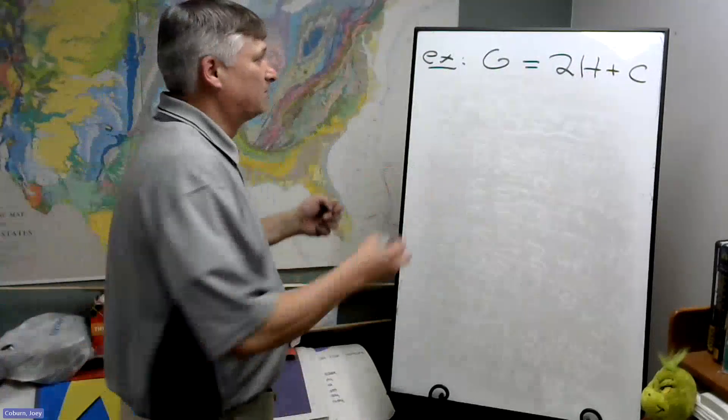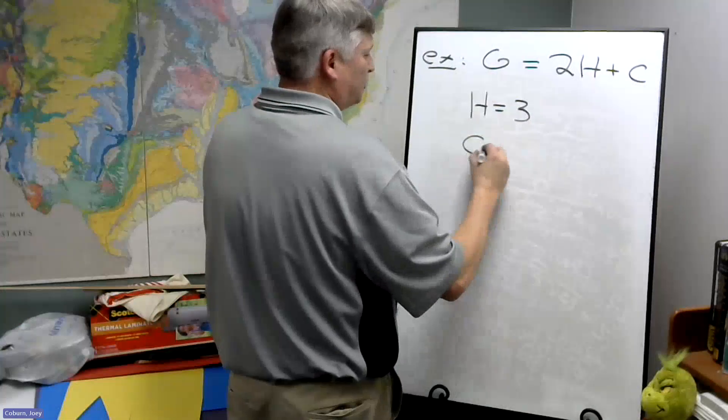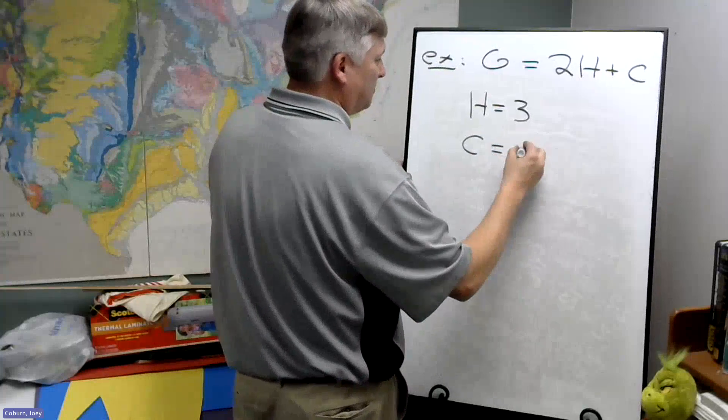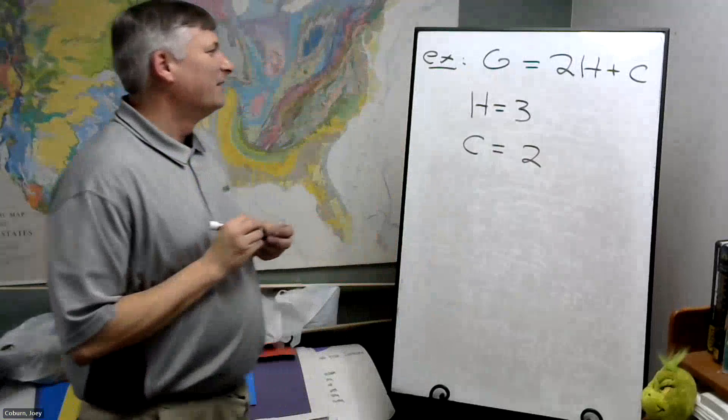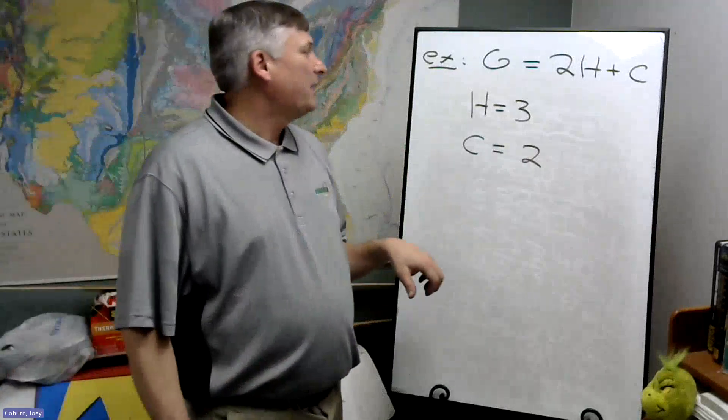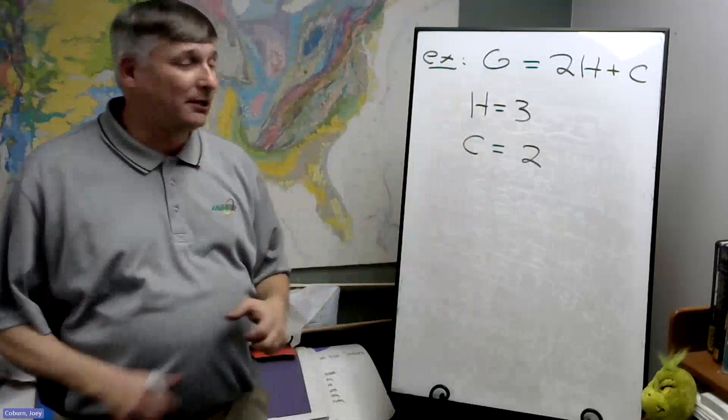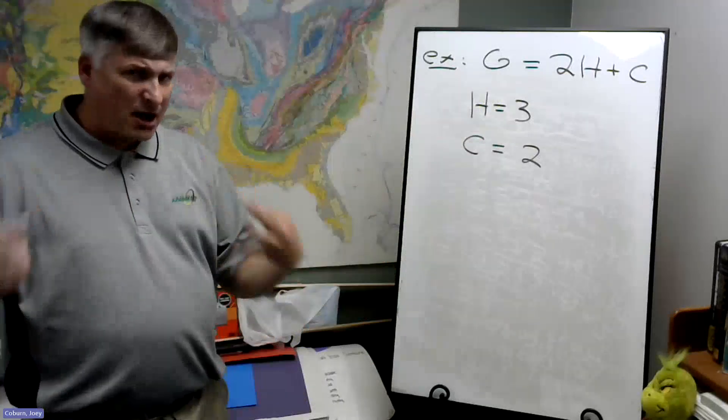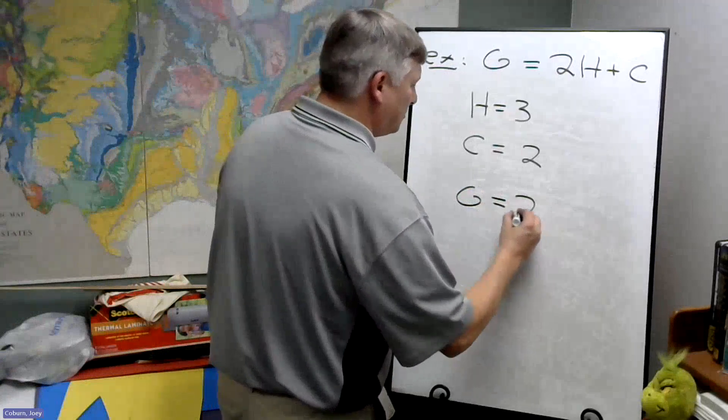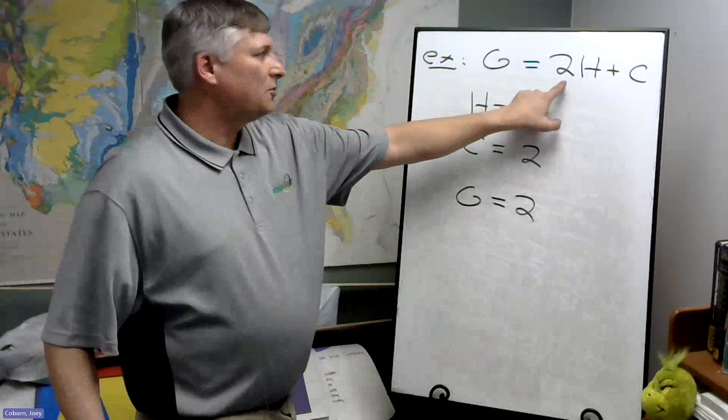So let's choose a value for H. Let's choose H equals 3 and C equals 2. The value of G will change depending on what choices of H and C that we've made. So how do we interpret this? Now G is equal to 2 times H. Now H is 3, so 2 times the number,